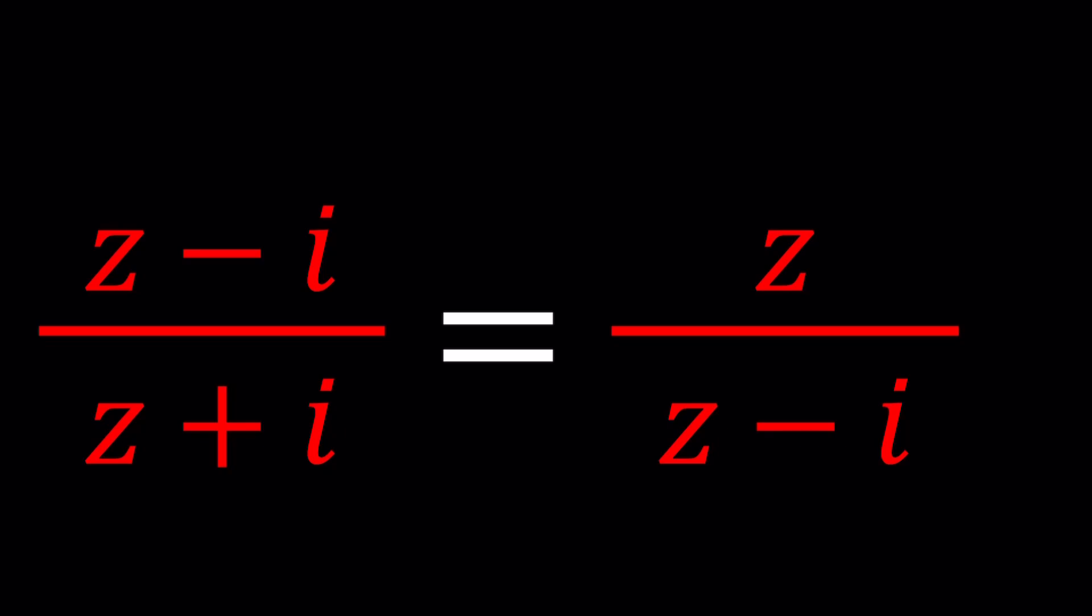So z is a complex number, we have z minus i divided by z plus i, and that's equal to z over z minus i. We're going to find the complex number that satisfies this equation, and I'll be presenting two methods.